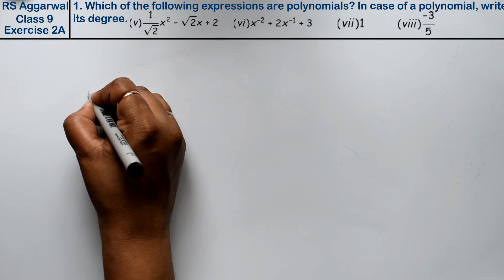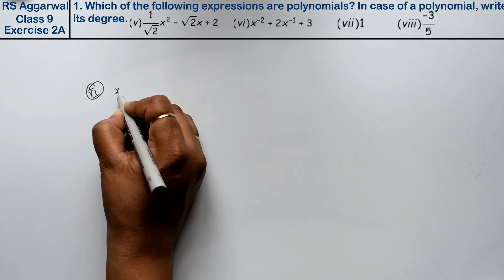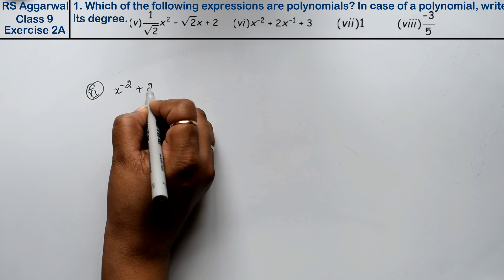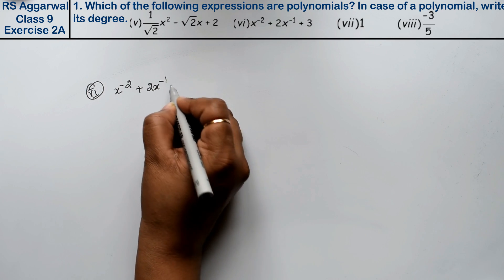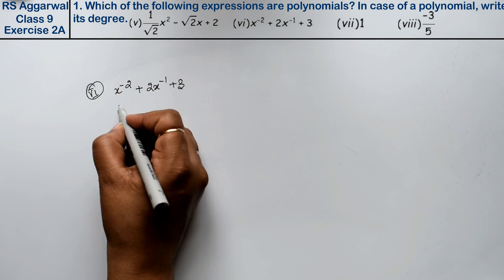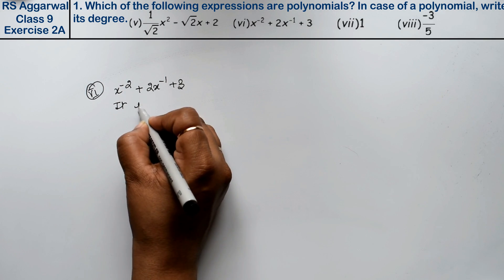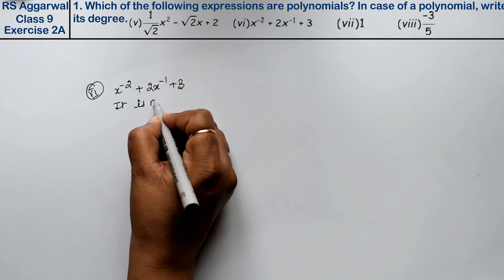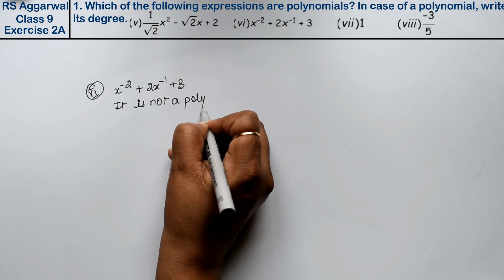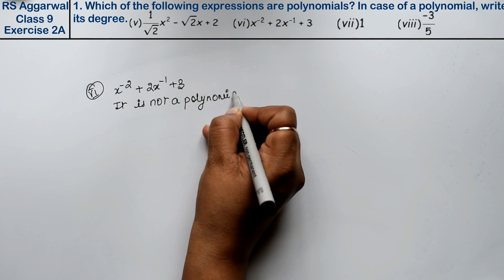Sixth part is x to the power minus 2 plus 2x to the power minus 1 plus 3. Whenever the power is in negative form, that is not a polynomial. So it is not a polynomial.